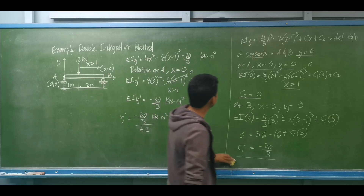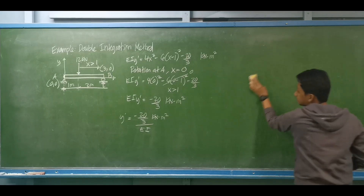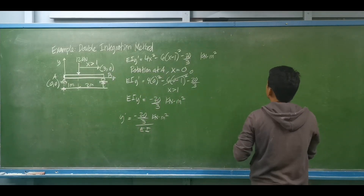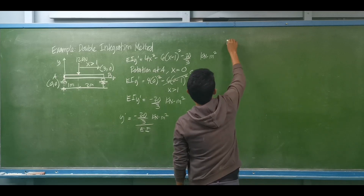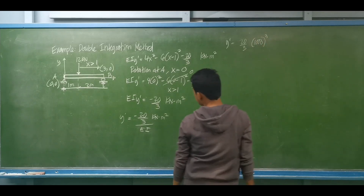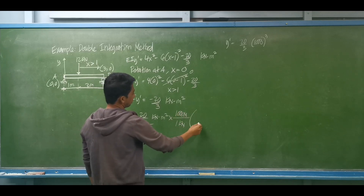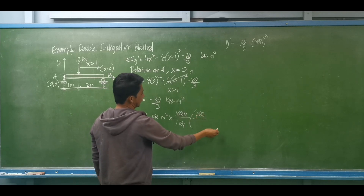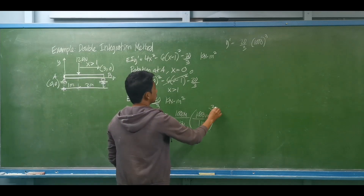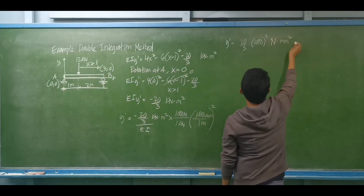To determine the actual value of the rotation, y prime equals (20/3) multiplied by 1,000 (for kilonewton to newton) times 1,000 squared (for meter squared to mm squared), divided by E. The beam dimension is 150 mm by 300 mm, and E equals 200 GPa, which is 200,000 N/mm².